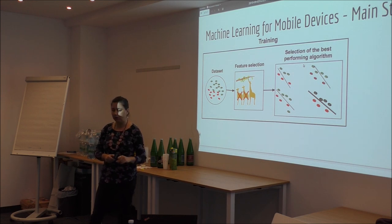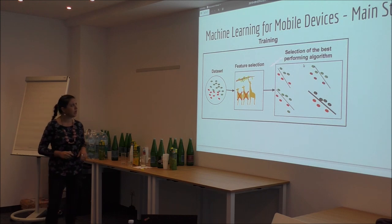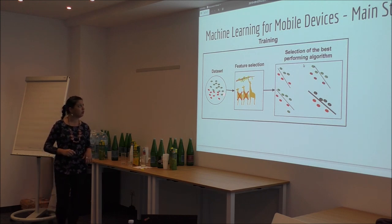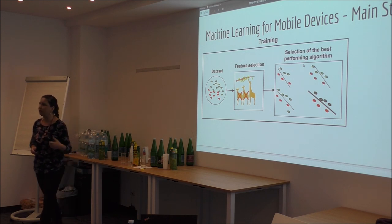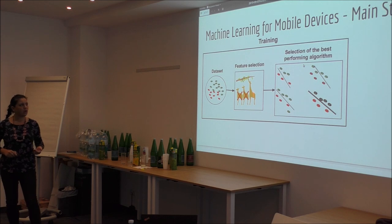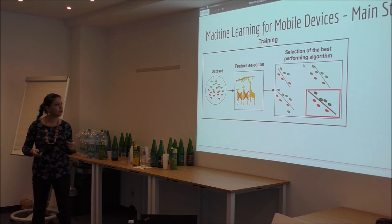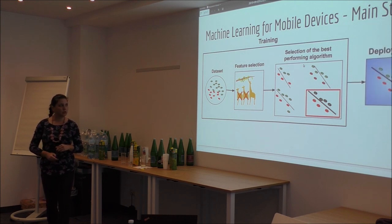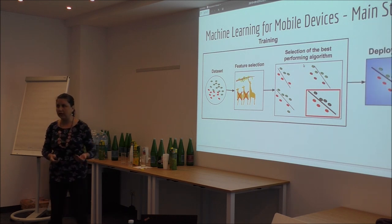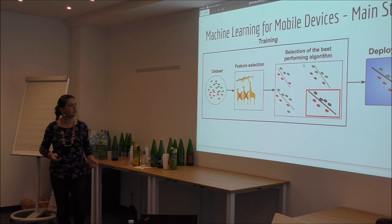The main steps of a machine learning system deployed on mobile devices are: first, training, where we have a dataset representing our domain; then we choose features most representative of the phenomenon we're examining; then we choose a set of algorithms that could potentially separate the data; and based on some metric we select the best-performing one. Then we go into deployment, use the selected method, and hope it performs well.